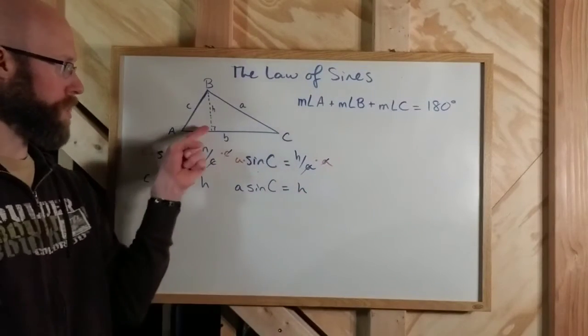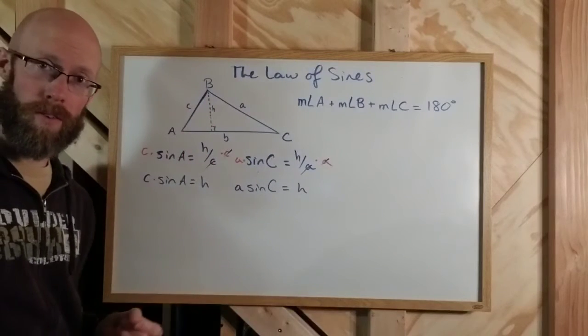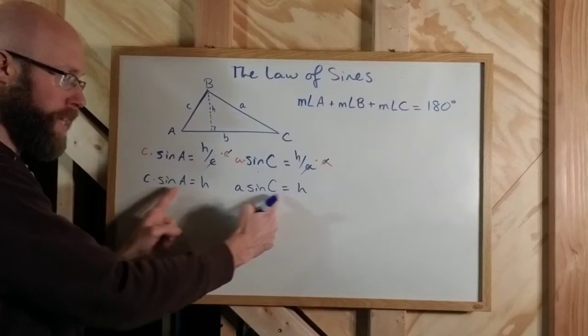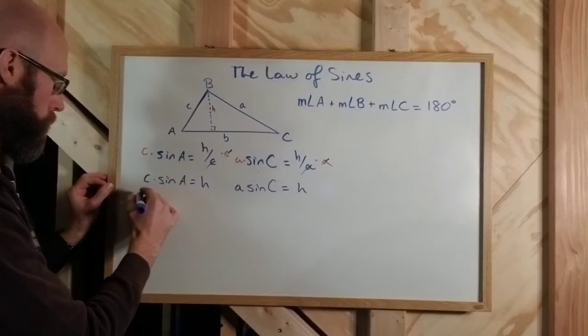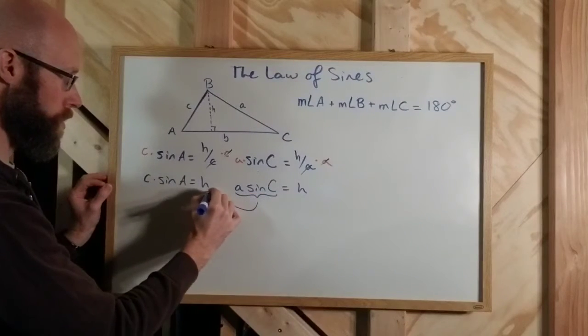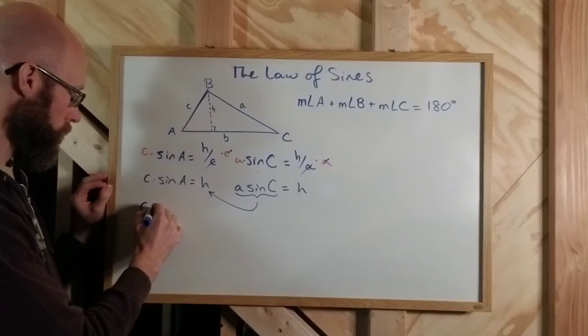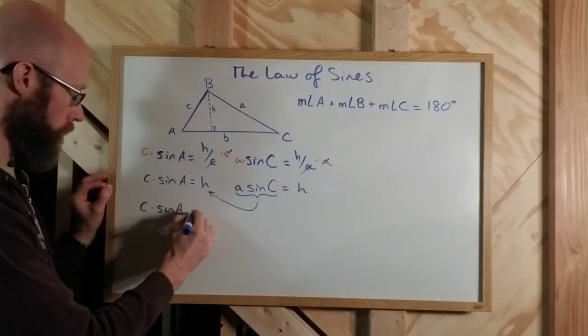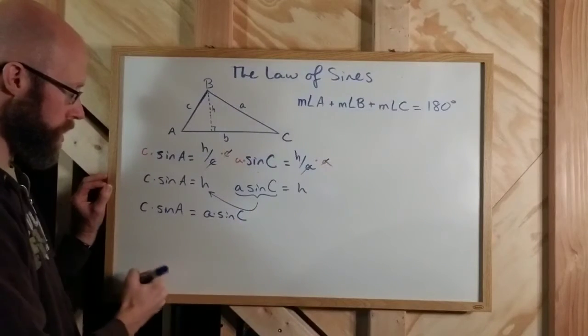Well, if two things are equal to the same H, then they must be equal to each other. Right? If two things are equal to H, then they must be themselves equal to each other. So, I can do a substitution here. This stuff is equal to H, so it can be substituted for H. And I get C times the sine of A is equal to A times the sine of C.